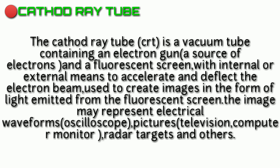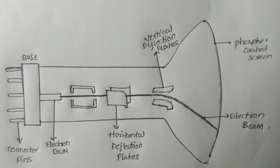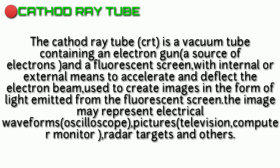What is a cathode ray tube? A cathode ray tube is a vacuum tube containing an electron gun, a fluorescent screen, and internal and external plates. The image is formed on the fluorescent screen as light energy representing electrical waveforms. Applications include pictures, televisions, computer monitors, radar targets, and others.